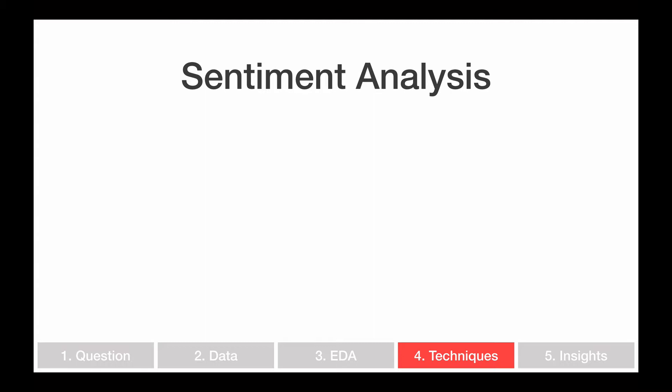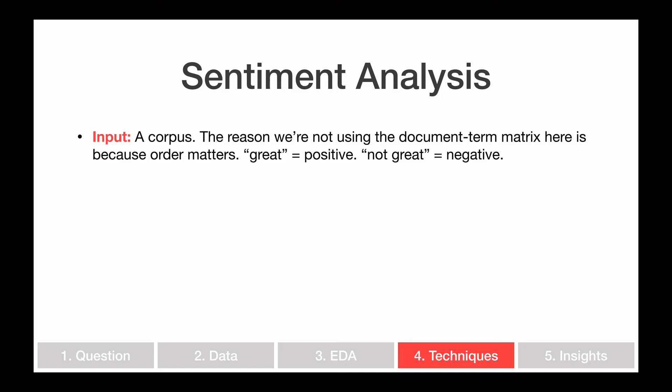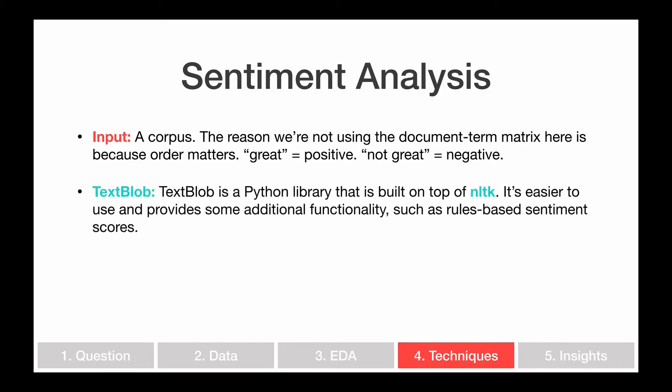In this video I want to go through the details of how to do sentiment analysis in Python. The input to this step is a corpus — a collection of text documents. We want to keep this collection in the order it's written, because if we have a word like 'great' we want that flagged as positive, and a phrase like 'not great' flagged as negative. We want to keep all of our original text in the original order to capture these sentiments. The tool we're going to use is called TextBlob.